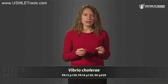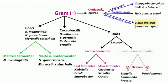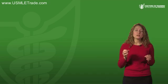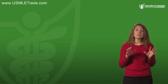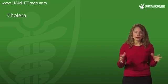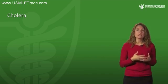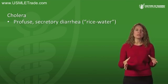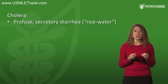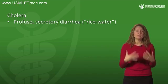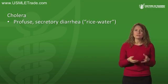Now let's talk about Vibrio cholerae. As seen on the gram-negative algorithm, this is a gram-negative rod shaped like a comma, is oxidase positive, and grows in alkaline media. It's also motile with a flagellum. This organism causes cholera, which kills about 100,000 people every year. Cholera is characterized by profuse secretory diarrhea — people can actually go into hypovolemic shock within 24 hours because of the massive fluid loss.